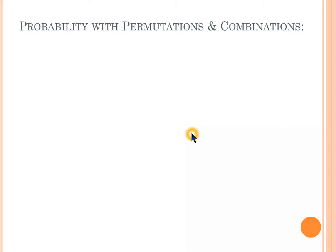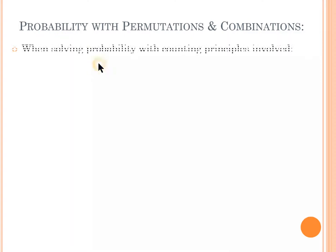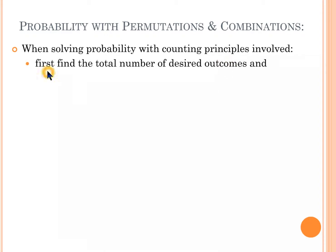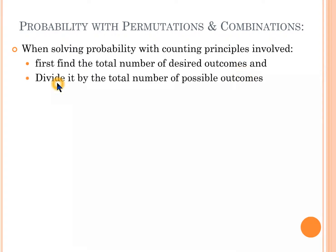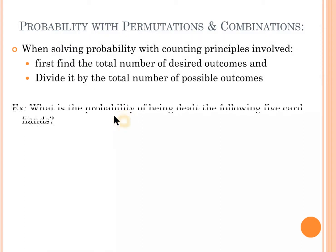Now that we've reviewed basic permutation and combination questions, let's combine that with probability. When solving probability with counting principles, we need to first find the total number of desired outcomes and then divide by the total number of possible outcomes. That division turns the problem into a probability situation.